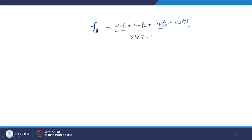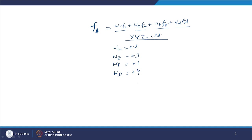Let us take figures for example. The company is XYZ Limited, wanting to raise capital for a new project. The weights given are: W_r equals 20 percent for retained earnings, W_e equals 30 percent for equity capital, W_p equals 10 percent for preference capital, and W_d equals 40 percent for debt. These sum to 100 percent, so 20 percent comes from retained earnings, 30 percent from equity, 10 percent from preference capital, and 40 percent from debt.